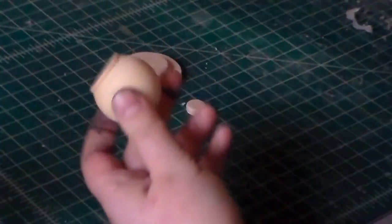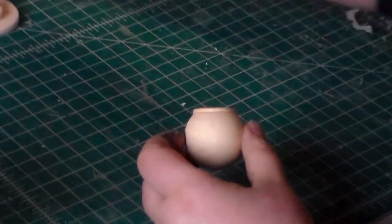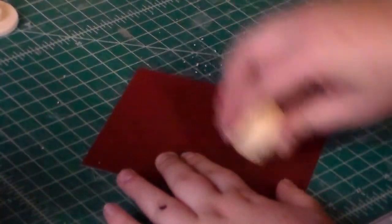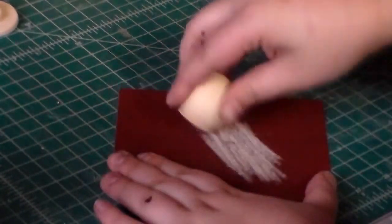When the glue is set for the knob, grab some coarse sandpaper and sand down the edges of the disc on the bottom so the knob has a more round bottom before cutting off. Then smooth it out with finer sandpaper.